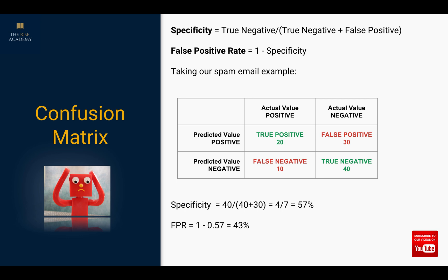Finally, we have a couple of other measures. The first is called specificity, which is true negative divided by true negative plus false positive. Then there is false positive rate, which is 1 minus specificity. These are not as commonly used but are the counterparts of the true positive rate.